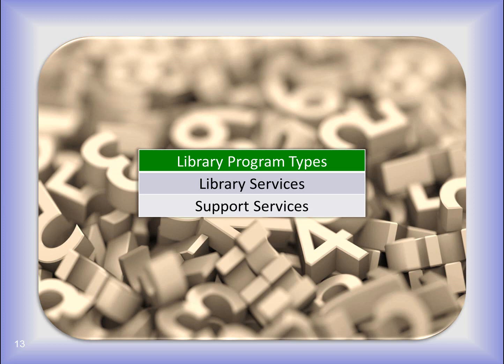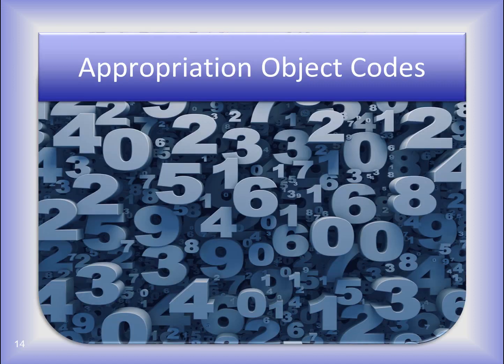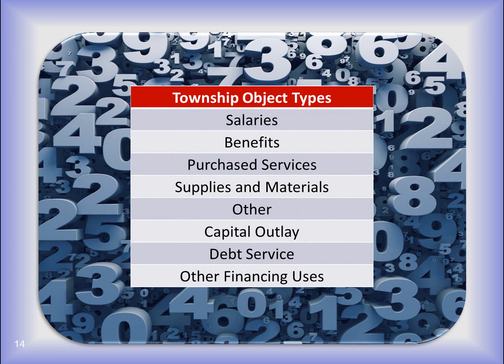You can see that the library program types are very different from Township and Village. The last group of numbers in an appropriation account is the object code. Object codes represent the purpose of the expenditure. As with fund, revenue, and program codes, there are object types. On the screen you see the object types that belong to the Township Chart of Accounts. Within each of these types are object codes. When selecting an object code, I look at the object types and select the object code from the correct type.